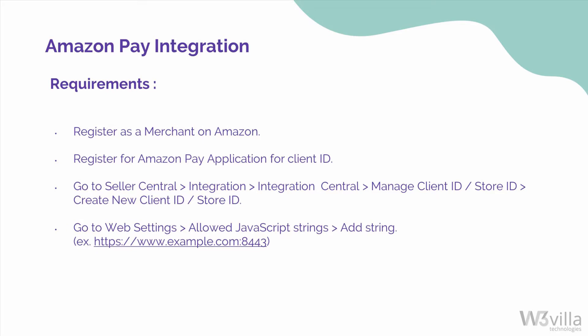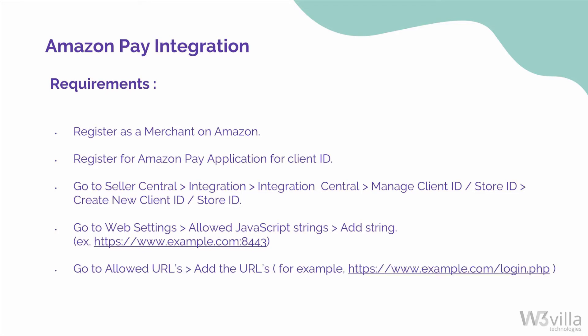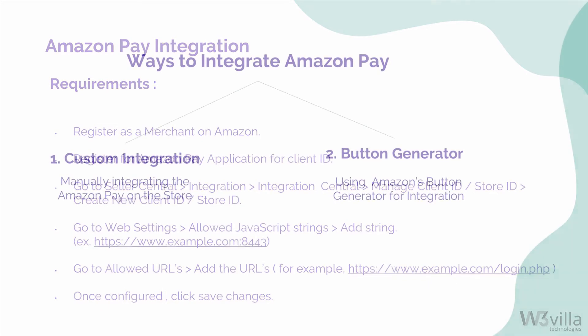Under Web Settings, you need to specify the values for authorizing interactions between your website and Amazon. This is done because web browsers normally block cross-origin communication between scripts unless the script specifically allows it. Enter the Allowed JavaScript Origins — the origin is the combination of protocol, domain name, and port — and enter the Allowed Return URLs. The return URL includes the protocol, domain, path, and query strings. Once configured, click Save Changes.